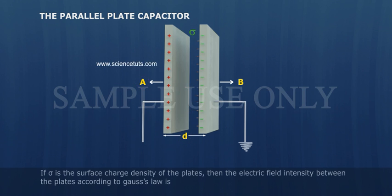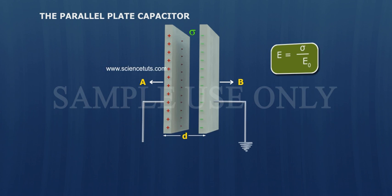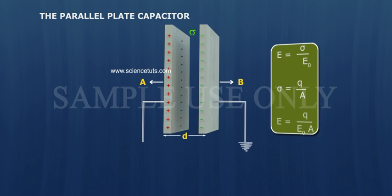If σ is the surface charge density of the plates, then the electric field intensity between the plates according to Gauss's law is E equals σ by ε₀ where σ equals Q by A. E equals Q by ε₀A.